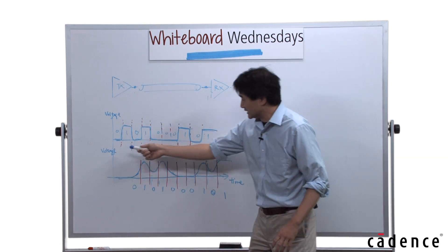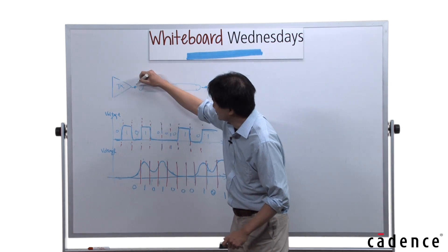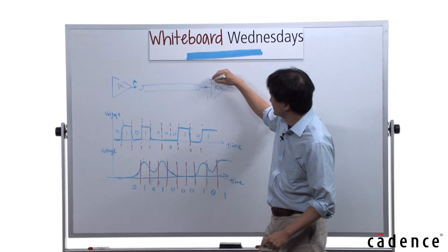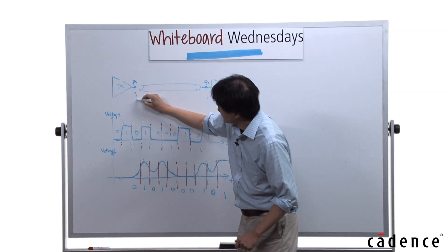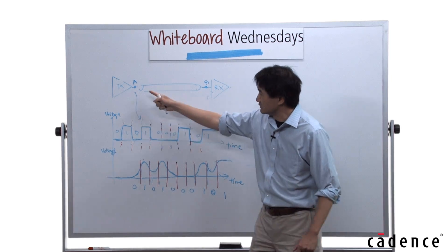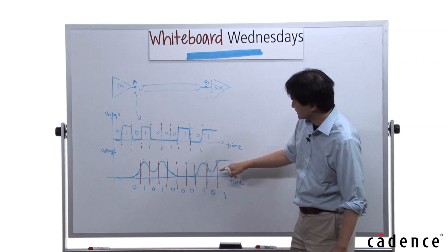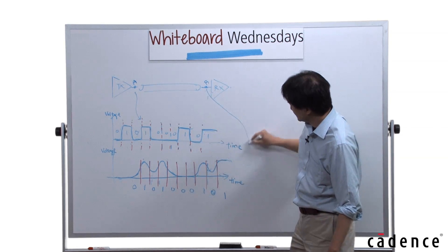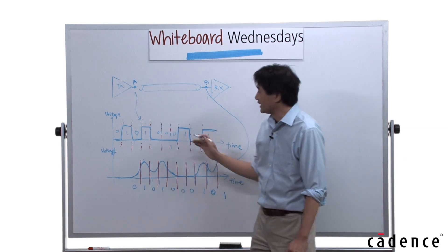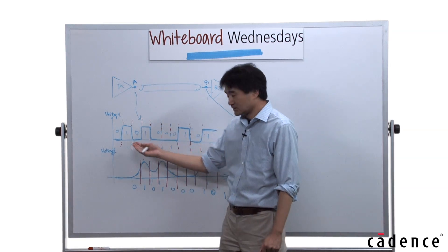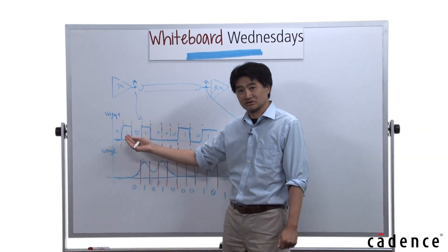I've already plotted what the waveform will look like. Let's call this point A and this point B. Here is the waveform observed at point A, and this is the waveform observed at point B. This is a binary system — the signal is digital, either 0 or 1.